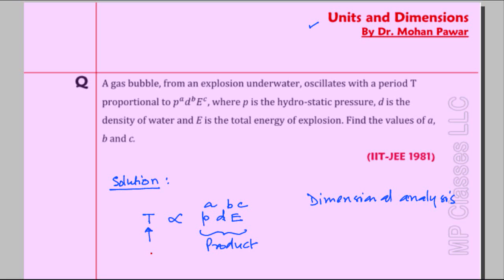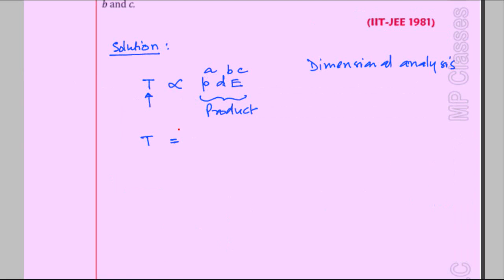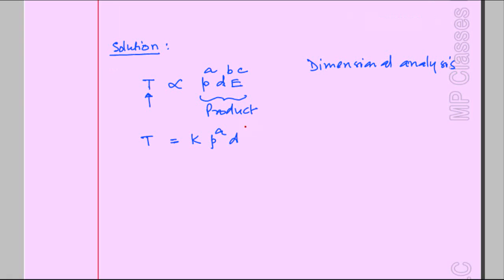We will simplify this further and substitute equality sign instead of proportionality by introducing constant K. Using basic algebra, we have T equals K times P to the power A, D to the power B, and E to the power C. This K is constant of proportionality. Because we already know this is dimensional analysis, the proportionality constant has dimensions L^0 M^0 T^0 because it is a number.